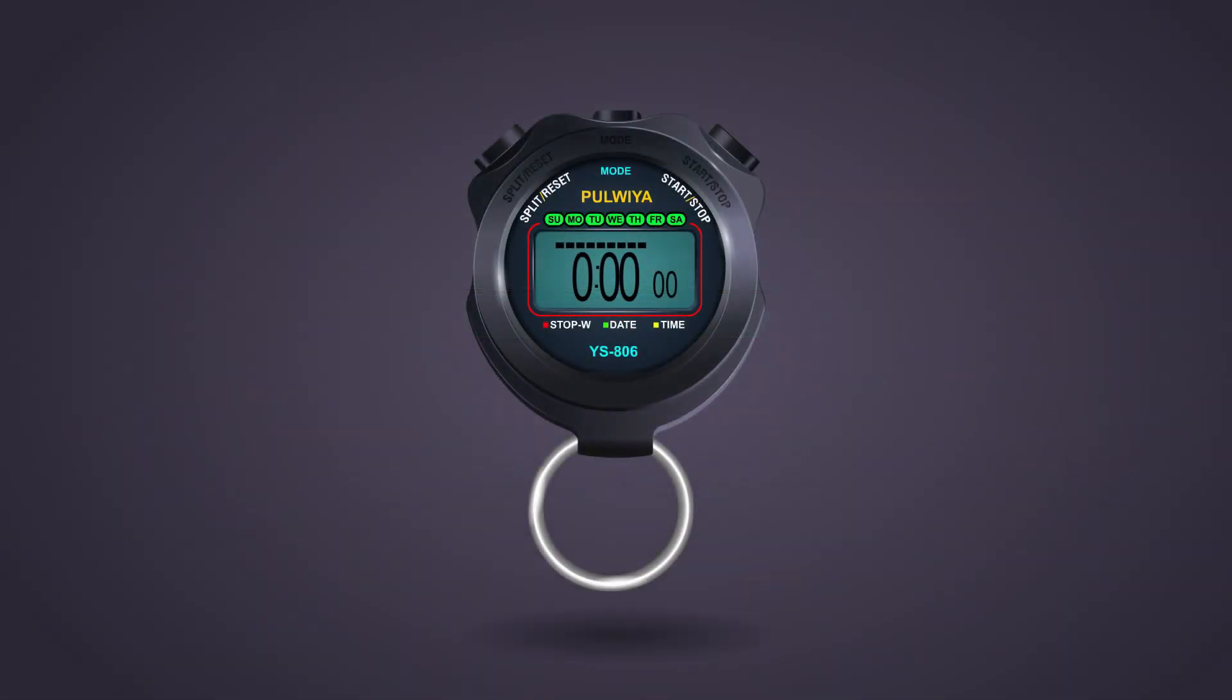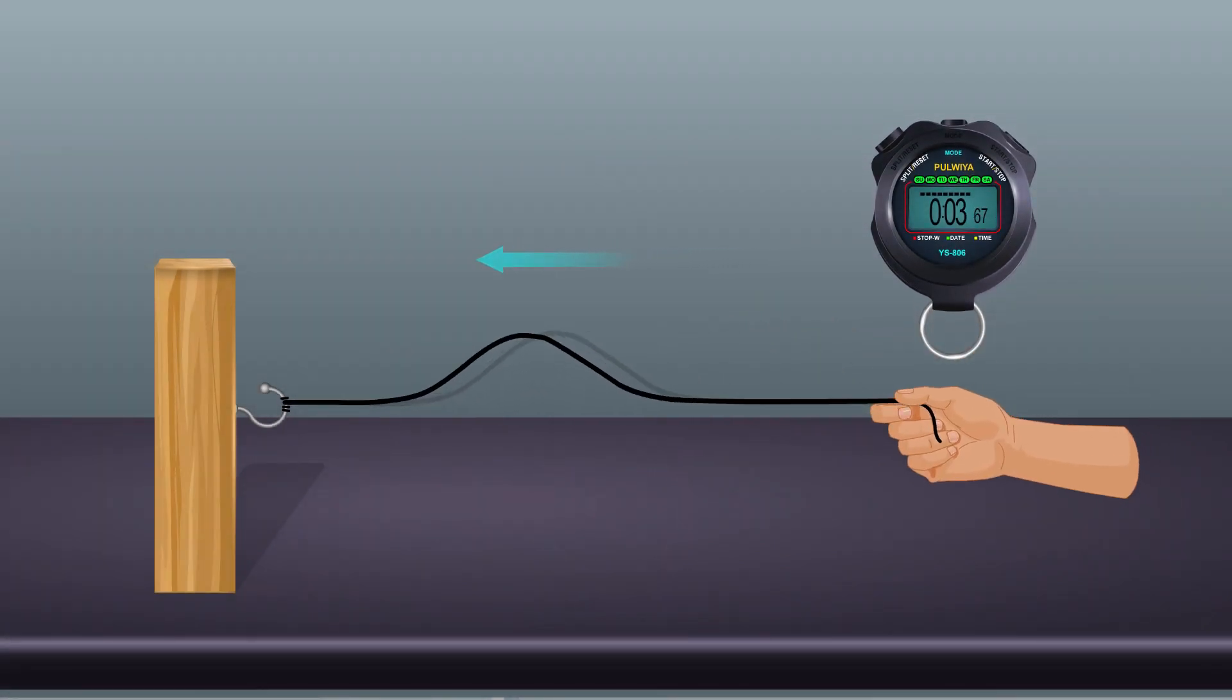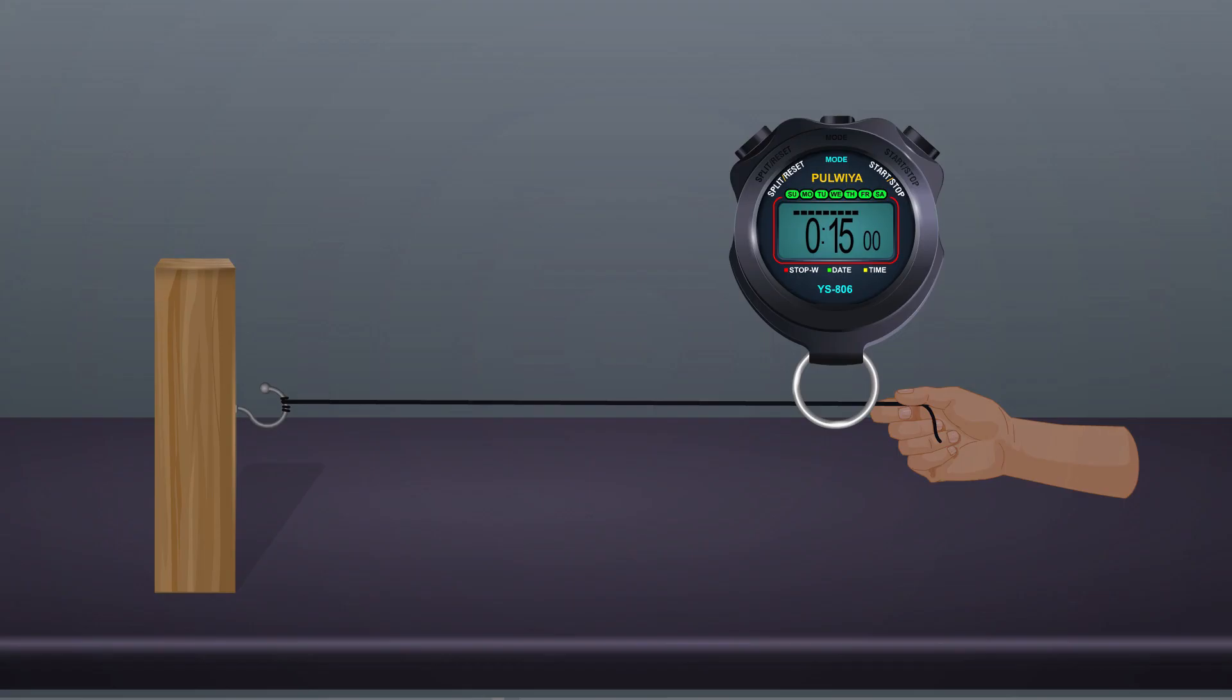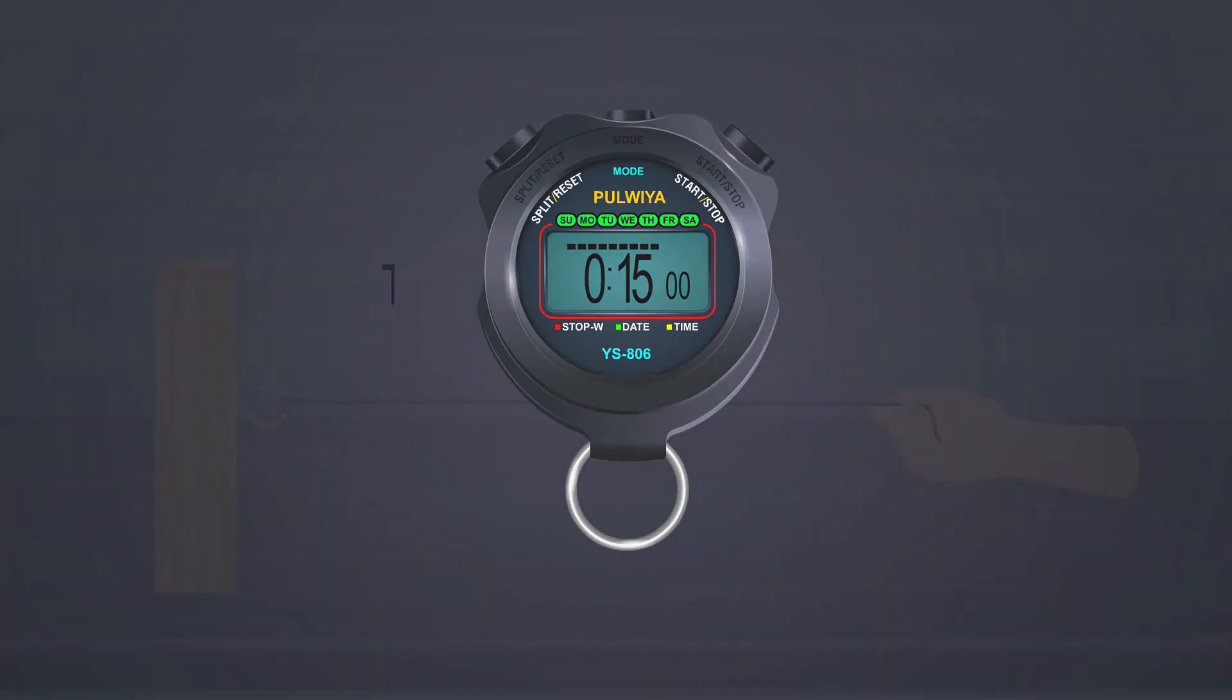Create a pulse and simultaneously start stopwatch. Observe the time for n journeys. Calculate time period by T = t/n, where t is time for n journeys and n is number of journeys.